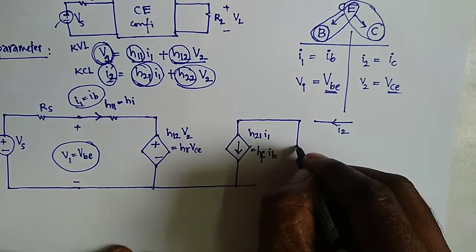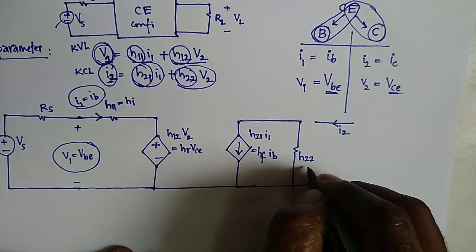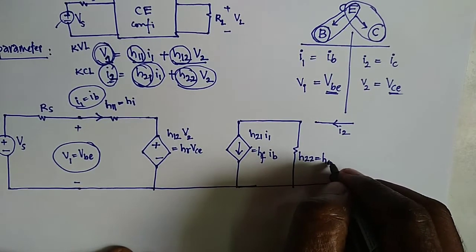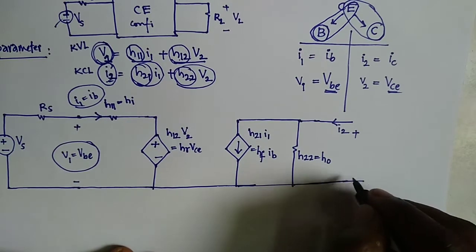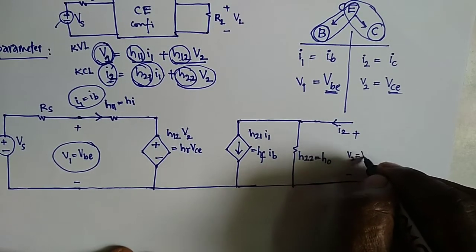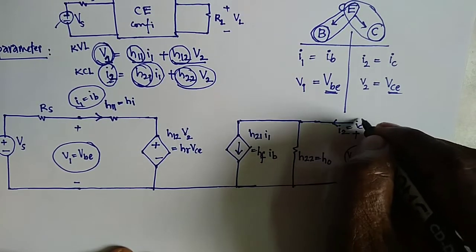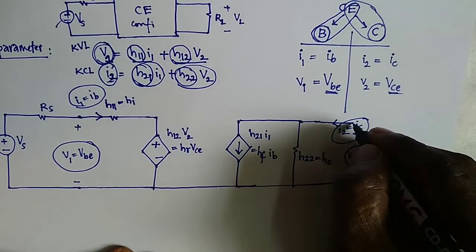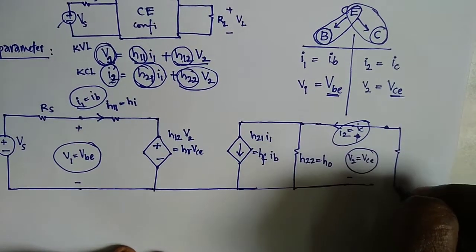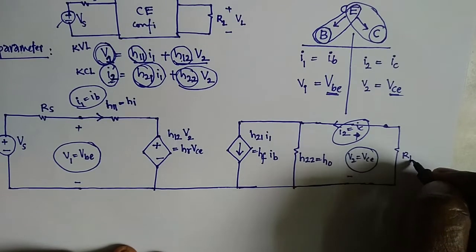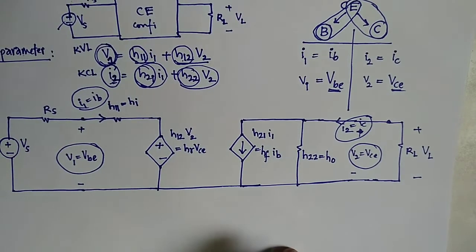H22 is the output admittance, replaced by H0. The output voltage V2 equals VCE and the output current I2 equals IC. This is the amplification stage; at the end we have a load resistor RL, and the voltage across it is VL or V0.